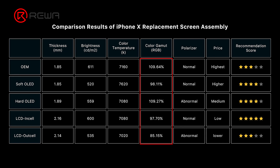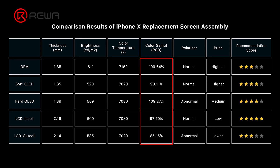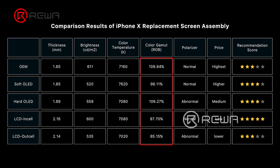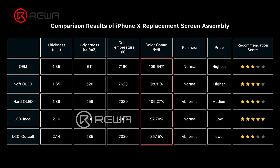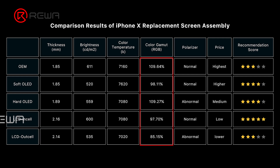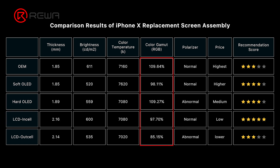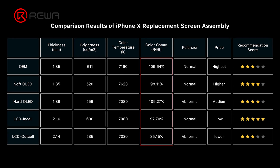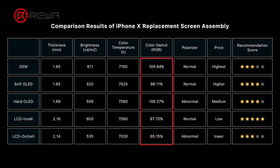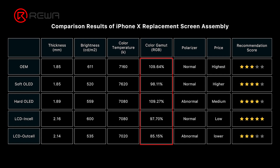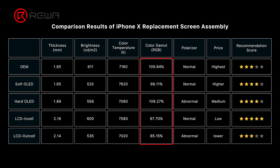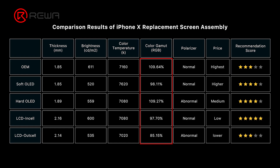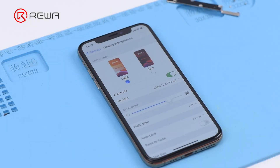Judging from the comparison results, soft OLED, hard OLED, and in-cell have better display. In terms of thickness, LCD is a little thicker than OLED, but concerning brightness and color temperature, the difference between the four aftermarket screen assemblies and OEM is not big. Although soft OLED and in-cell have a narrow color gamut, they perform almost as well as OEM in the display. The display of out-cell is worse, but it has the most advantageous price. You can choose a suitable replacement screen assembly according to your own needs.